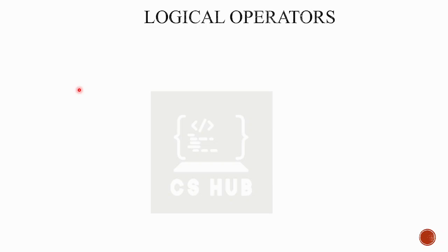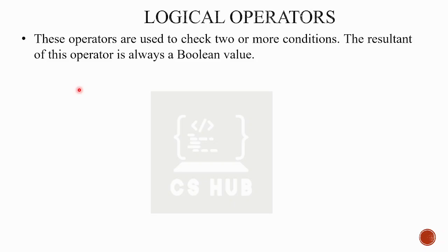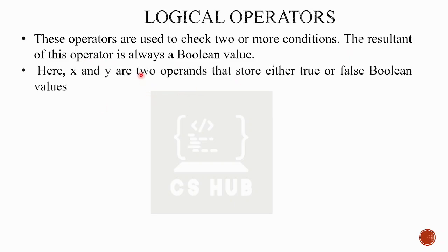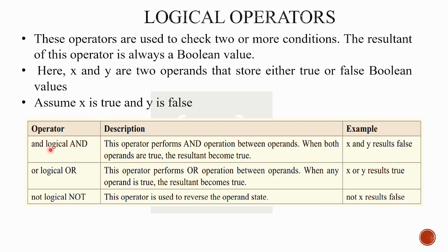Now the second category is logical operators. We call them AND, OR, and NOT. We can have two conditions combined using relational operators - for example, A less than B AND B less than C. The result of logical operators is always a boolean value. In Python, unlike C/C++ where we use symbols like && and ||, Python uses the keywords: and, or, not.